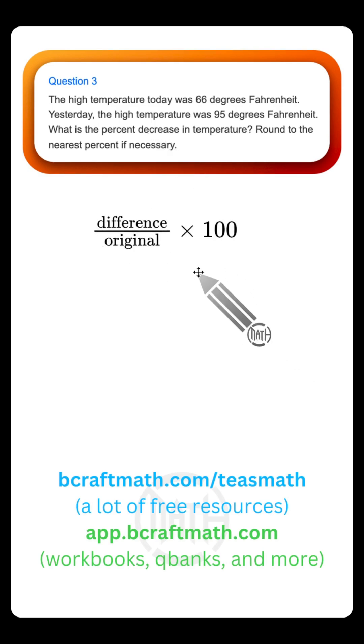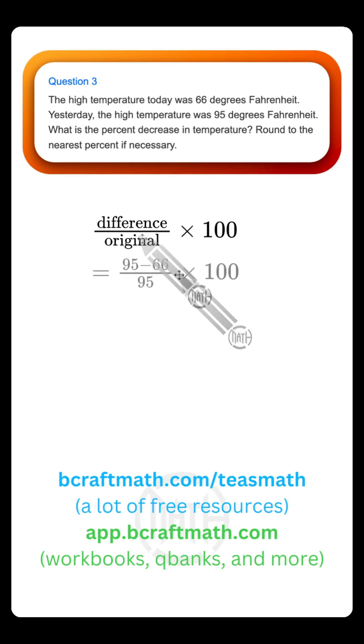Now, regardless of whether you're trying to find a percent increase or decrease problem, you always want to take the difference between the values, divide that by the original. You can also think of the original as being the older value. Now, this is a fraction. When we divide that, we're converting it to a decimal. But we need a percent, which is why I've tacked on this multiplying by 100 here.